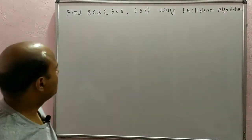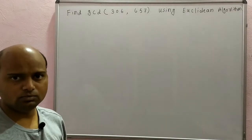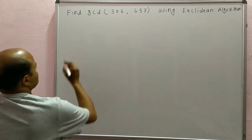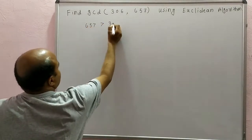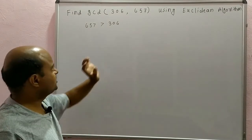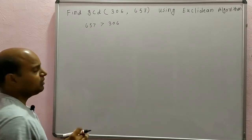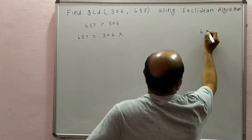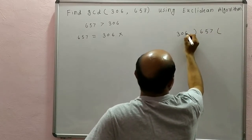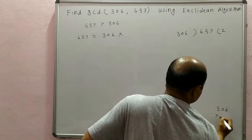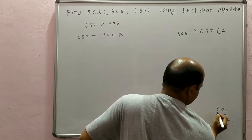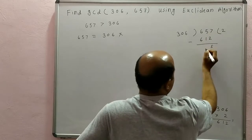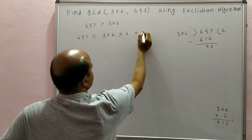Now we will see some numericals: how to find the GCD of two numbers using the Euclidean algorithm. Find GCD of 306 and 657 using the Euclidean algorithm. Here 657 is greater than 306, so we apply the division algorithm and divide 657 by 306. 306 times 2 is 612, so 657 minus 612 is 45. Therefore 657 = 306·2 + 45.